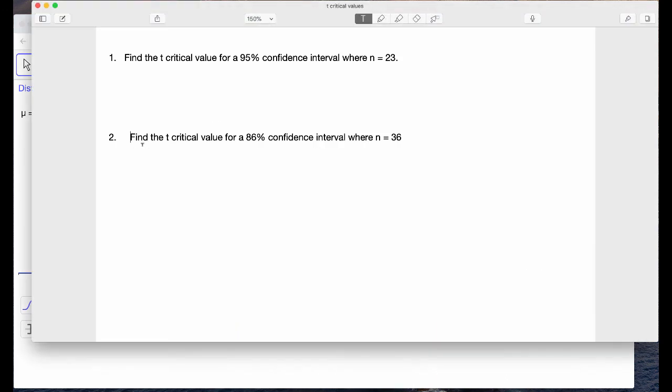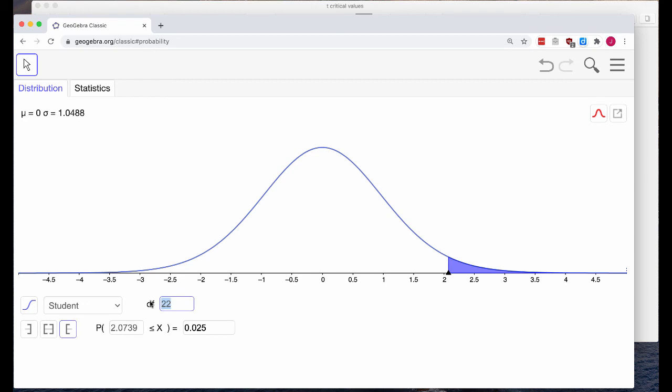Now let's go to the second example. Find a t-critical value for 86% confidence interval where n equals 36. So I'm going to change my degrees of freedom first. So 36 minus 1 is 35.